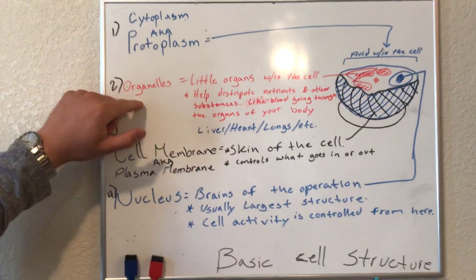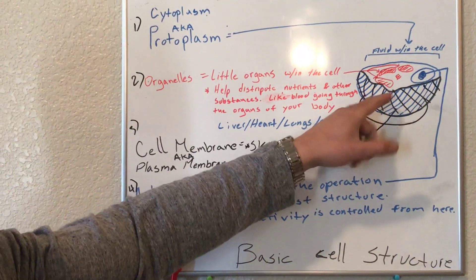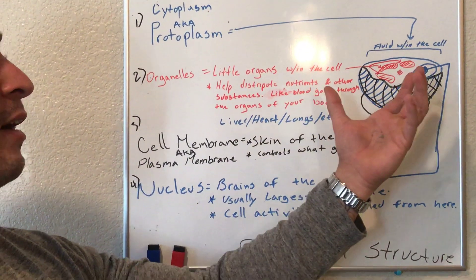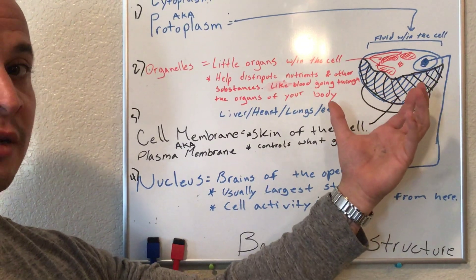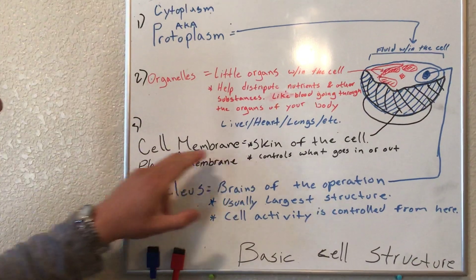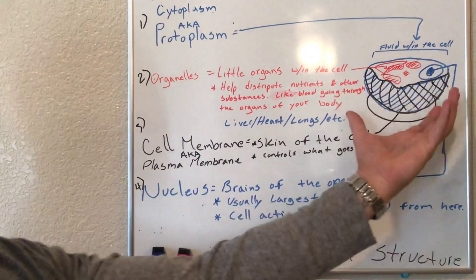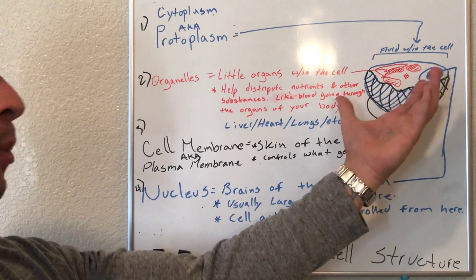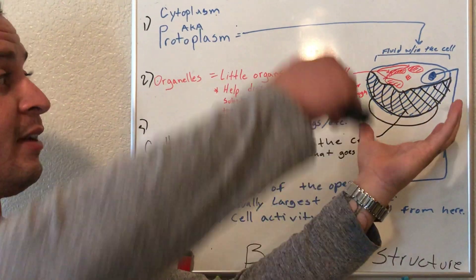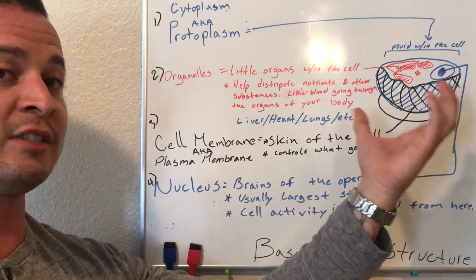Your organelles are like little tiny organs that are found inside the cell. The cell itself is like a living object — it's a living thing, so it's like a mini-human in a way. It also has a skin. The cell membrane acts as the skin of the cell, and within that skin, which protects it from the outside environment, you have the cytoplasm.